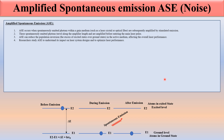ASE occurs when spontaneous emission happens and a photon is generated in the gain medium — that spontaneous emission is then amplified, generating a lot of noise. These spontaneously emitted photons travel along the amplifier length and are amplified before entering the main laser force.